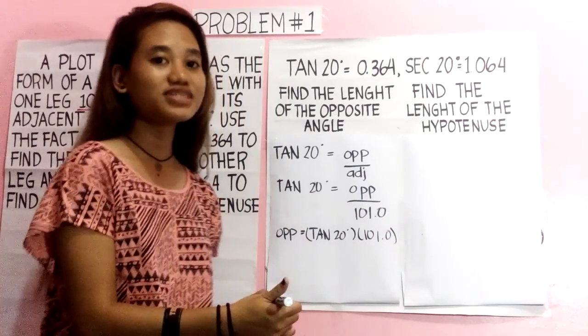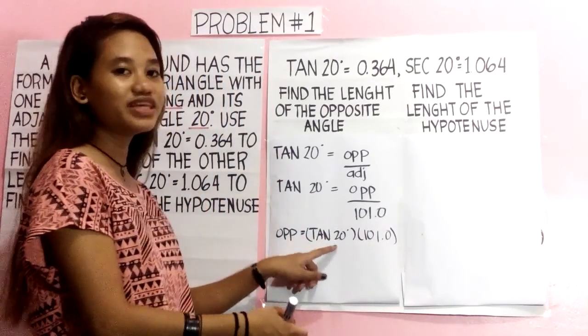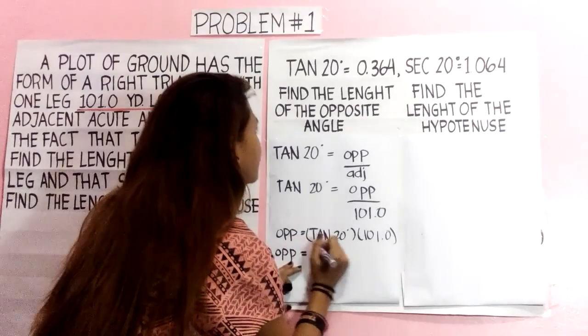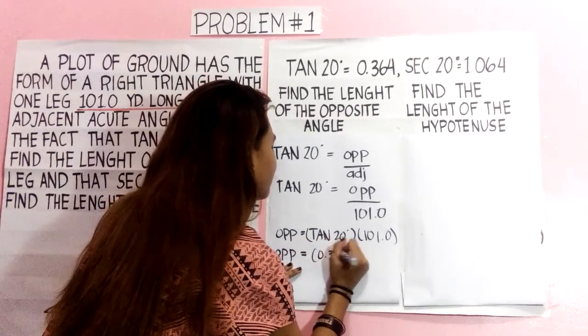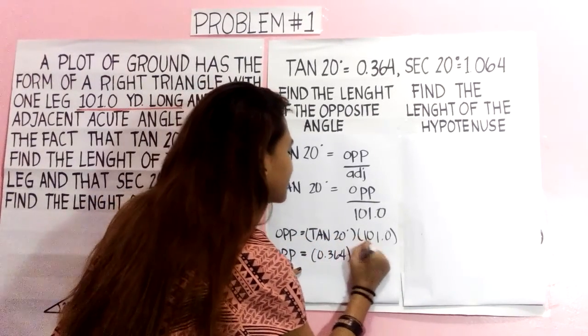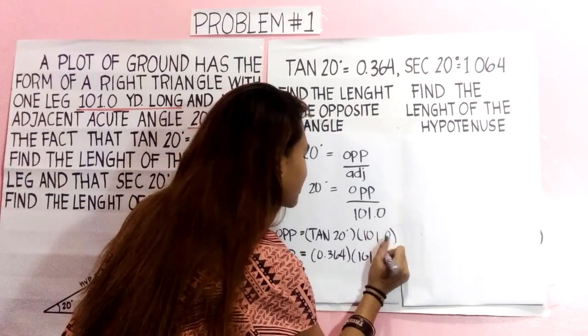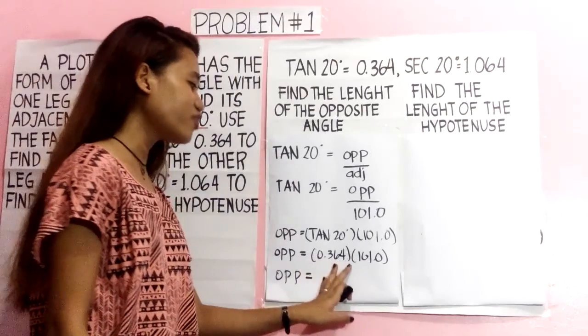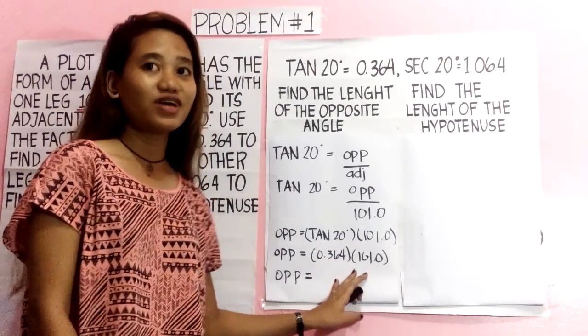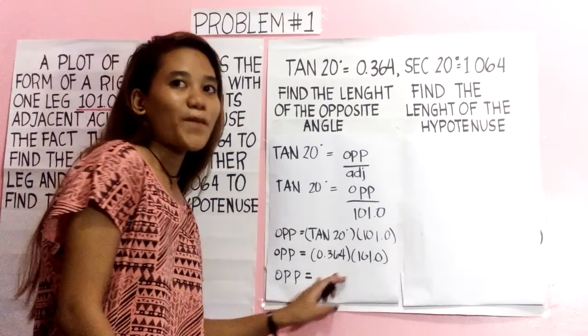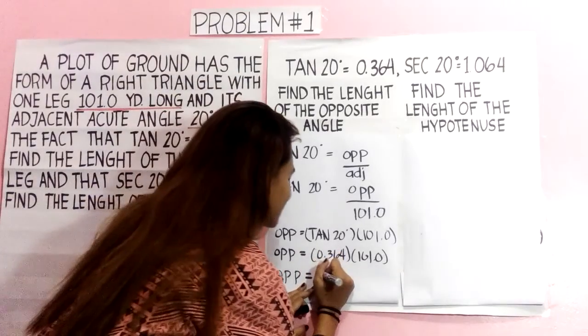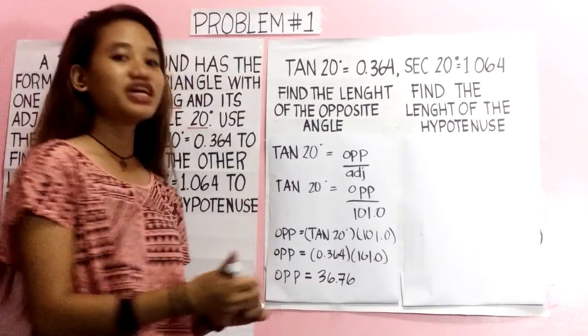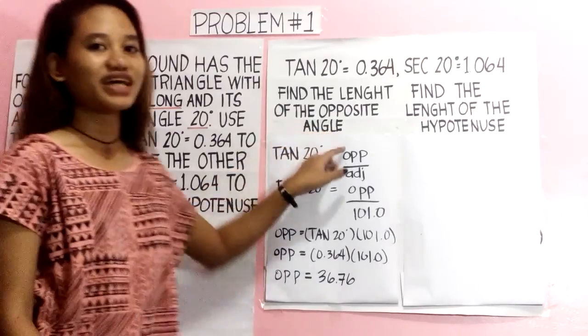We will substitute the value of tan 20 degrees, which is 0.364 times 101.0. So 0.364 times 101 equals 36.76, which is the length of the opposite side.